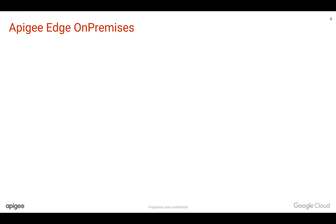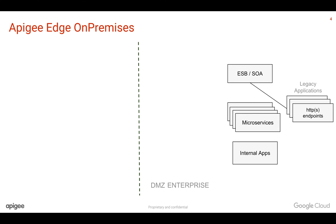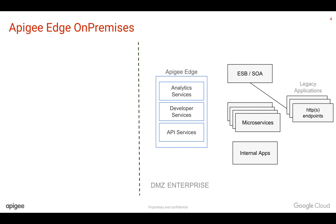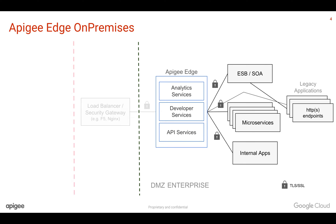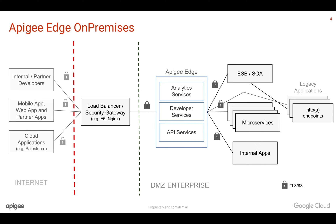Let's take a look at Apigee Edge on-premises. You will typically have similar microservices, internal applications, and ESB software talking to legacy applications. You will install Apigee Edge within your firewalls, sitting inside demilitarized zones or private cloud data centers, and it talks to different backend systems using virtual SSL for security. The endpoint of Apigee will be exposed to the outside world using a load balancer or security gateway like Nginx, to your partners, developers, internal applications, mobile applications, web applications, or cloud applications.